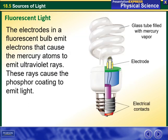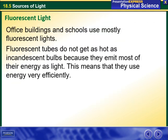The electrodes in a fluorescent bulb emit electrons that cause the mercury atoms to emit ultraviolet rays. These rays cause the phosphoric coating to emit light. Office buildings and schools use fluorescent lights most commonly.